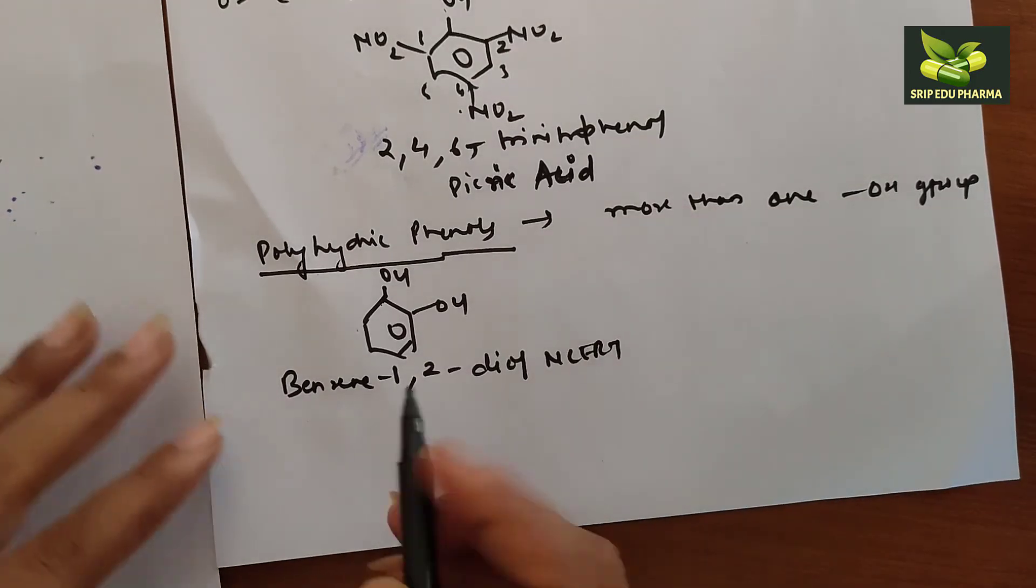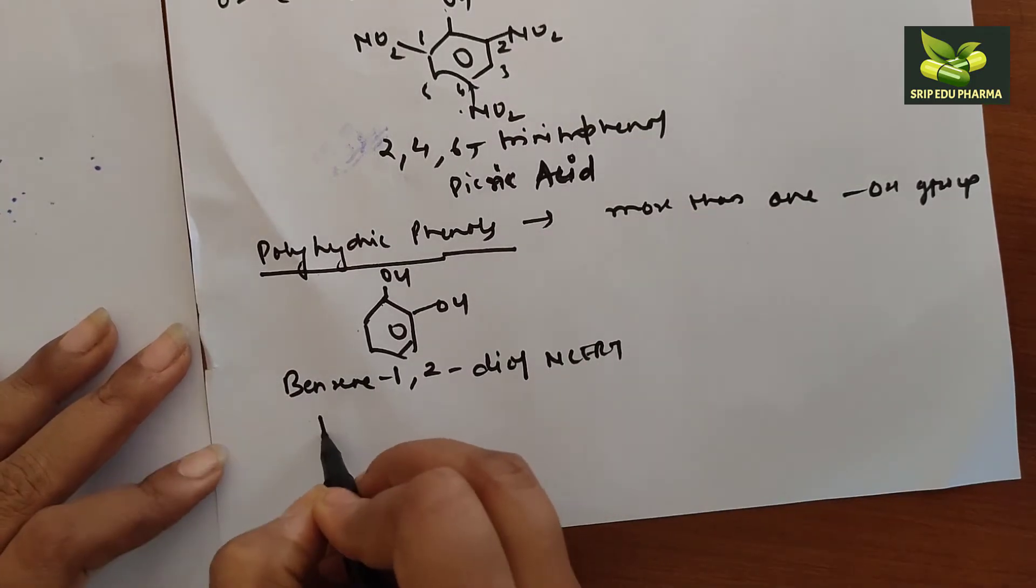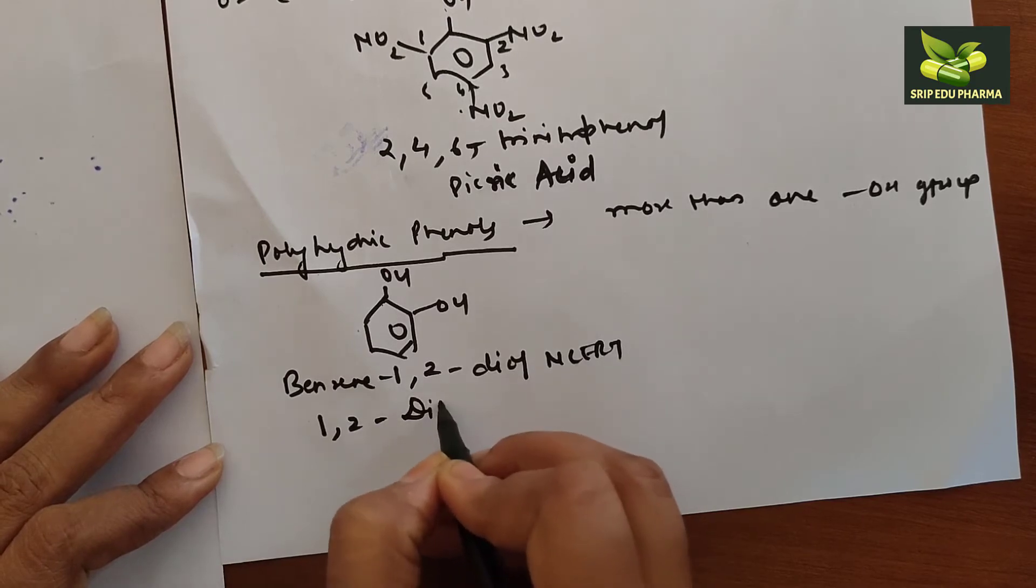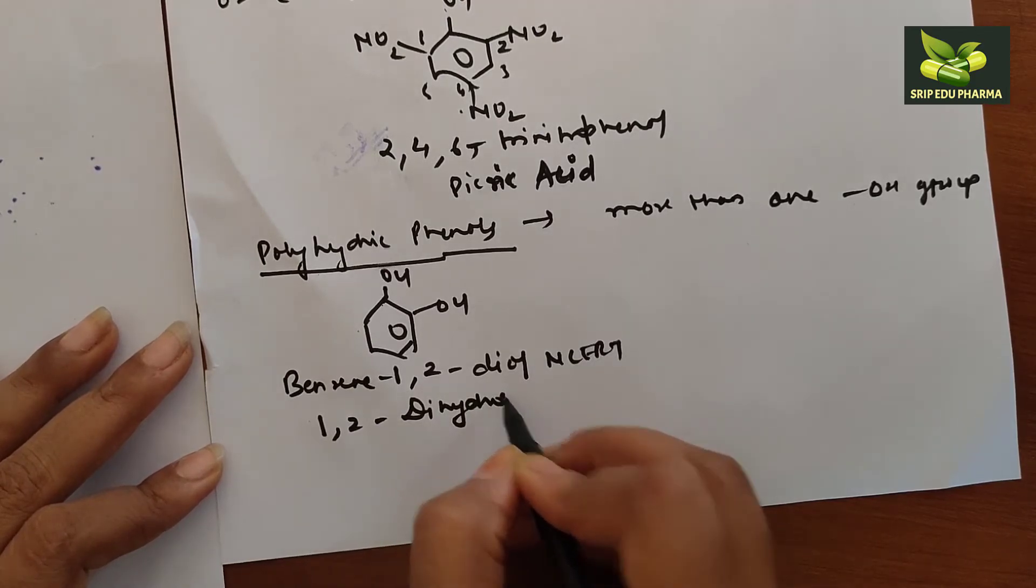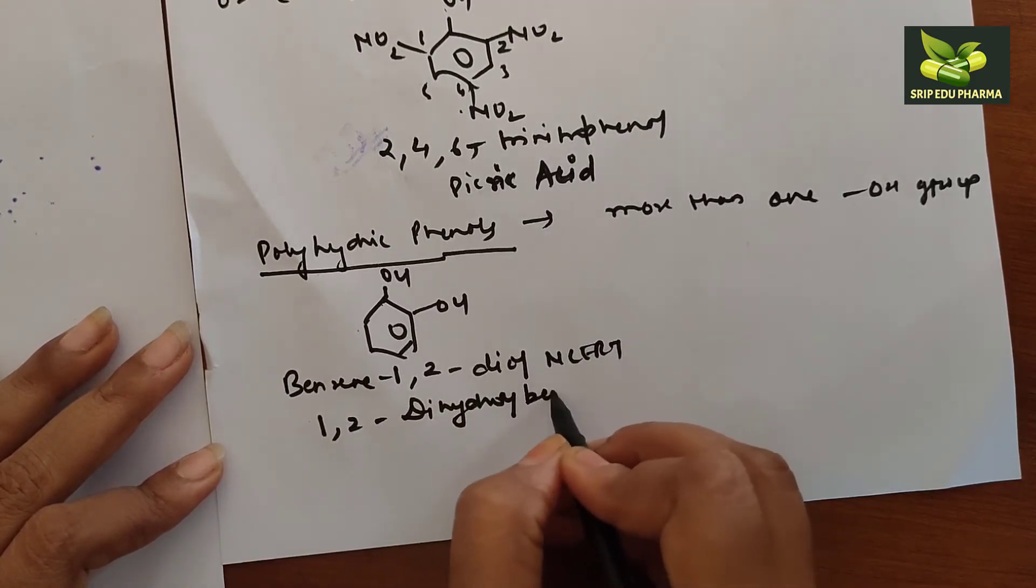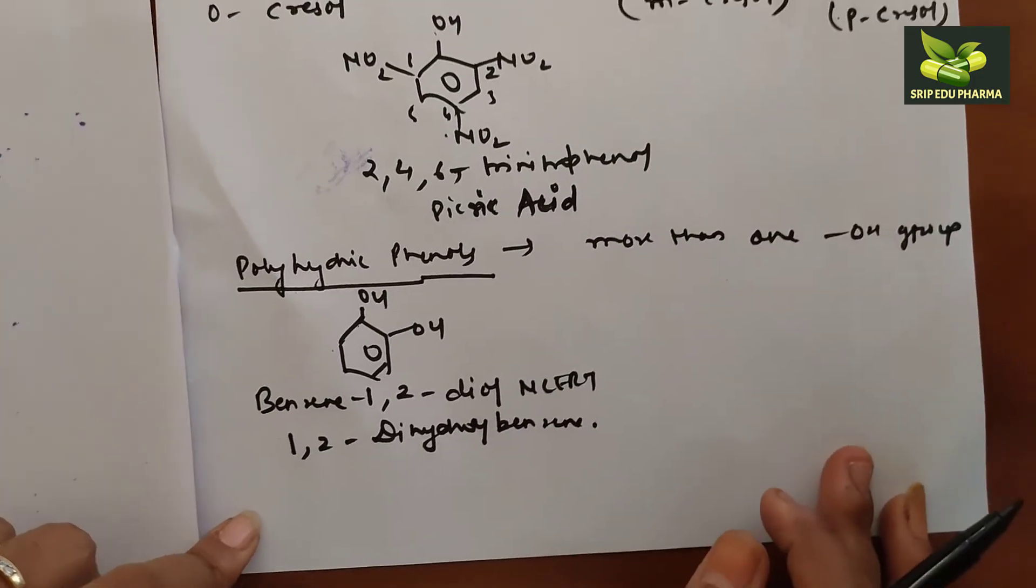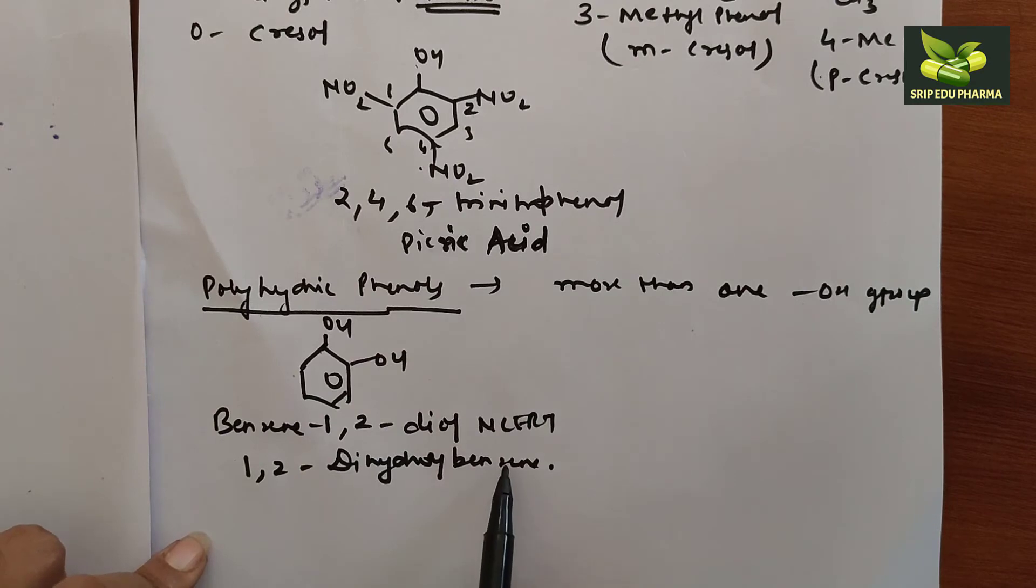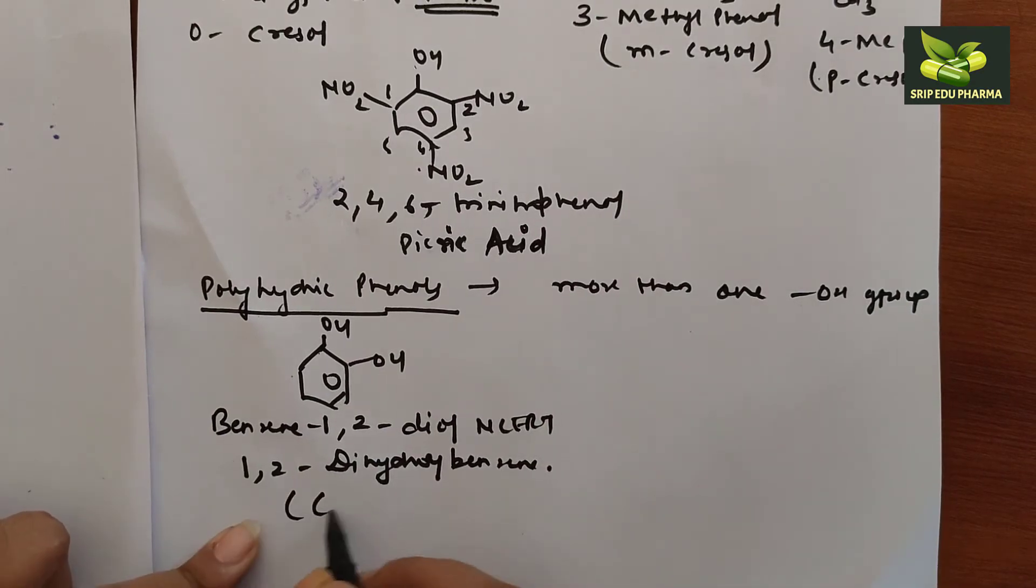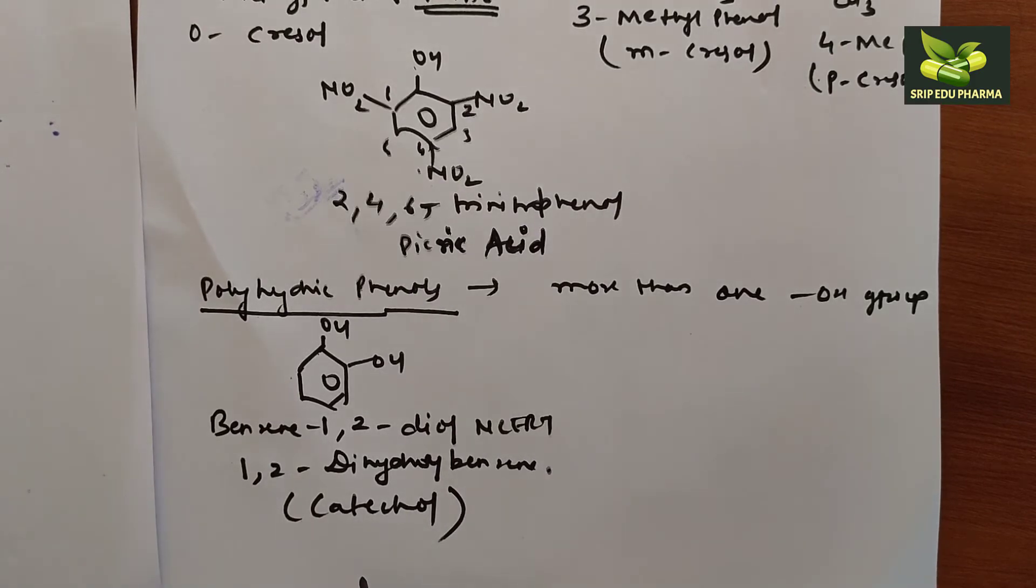If we see according to IUPAC name, its name will be 1,2-dihydroxybenzene. What will it be? 1,2-dihydroxybenzene. And the common name is catechol. What is its common name? Catechol.